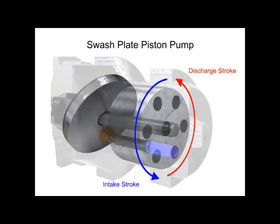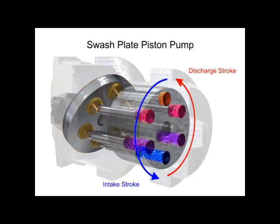Piston pumps, in general, are manufactured with closer internal fits than other pumps. This means that internal slippage can be less, so that they operate with reasonable efficiency at pressures both too high or too low for the operation of other pumps.